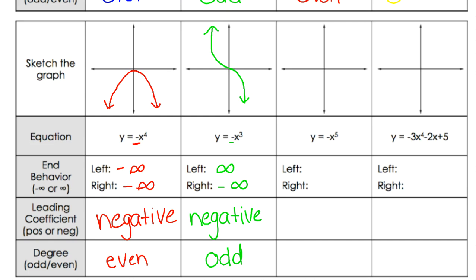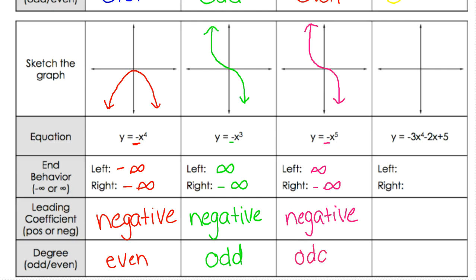Next up we have negative x⁵. If we graph negative x⁵, it looks similar to the one we just did. With negative x⁵, the left side is pointing upwards towards infinity and the right side is pointing downwards towards negative infinity. There is a negative out in front, so it has a negative leading coefficient, and it's fifth degree.